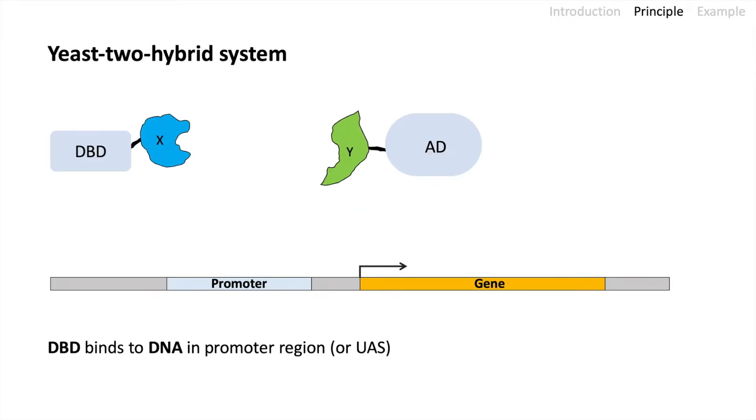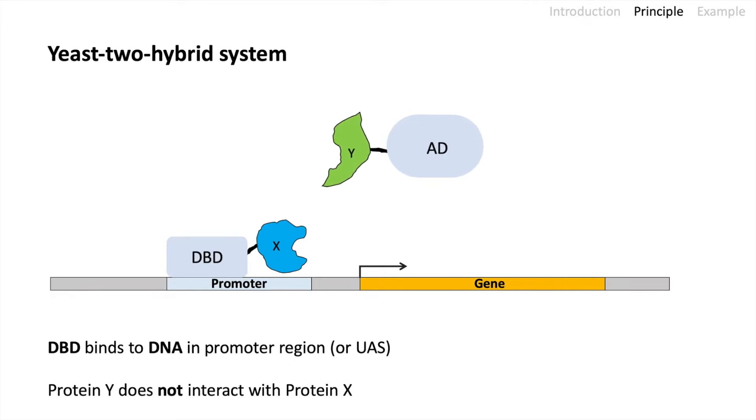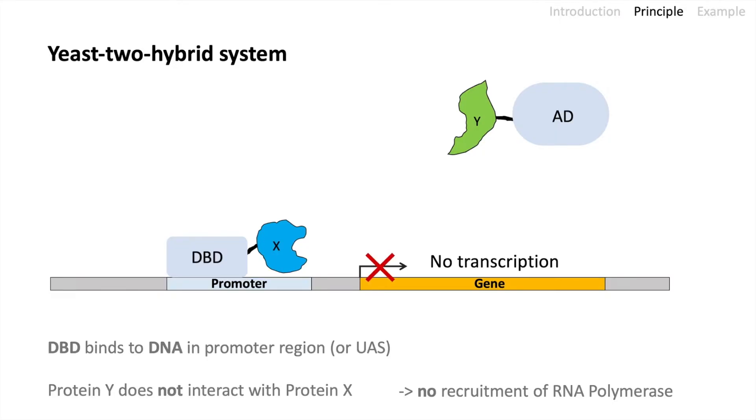What happens if they don't interact? Still, the DNA binding domain will bind to DNA in the promoter region. But protein X and protein Y in this case are different, they show no interaction. The activator domain does not come close enough to the gene region. No polymerase is recruited and that means we have no transcription in this case.